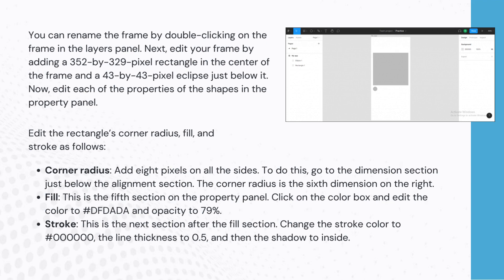Edit your frame by adding a 352x329 pixel rectangle in the center of the frame and a 43x43 pixel ellipse just below it. Then edit each of the properties of the shapes in the Properties panel. For the rectangle's corner radius, add 8 pixels on all sides — this is the 6th dimension on the right in the Dimensions section. For Fill, click on the color box, edit the color to #DATA and opacity to 79%. For Stroke, change the stroke color to #000000, the line thickness to 0.5, and the shadow to Inside.